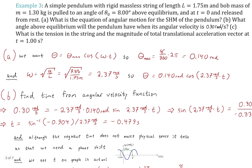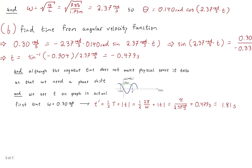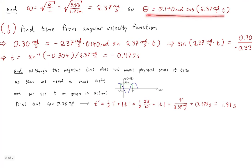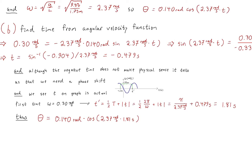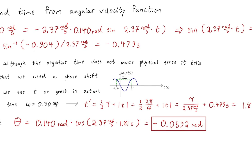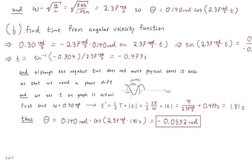Plugging t = 1.81 s back into the position function θ(t) = 0.14·cos(2.37t) gives θ = −0.0592 radians. This negative sign makes sense because the first time the pendulum has a positive angular velocity is when it's to the left of equilibrium — that's the negative angular position side of the coordinate system.